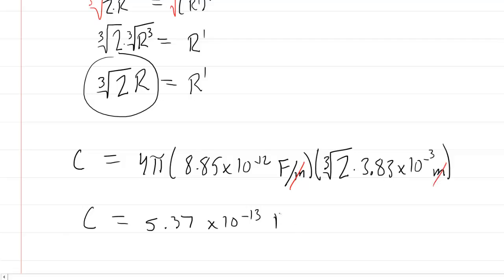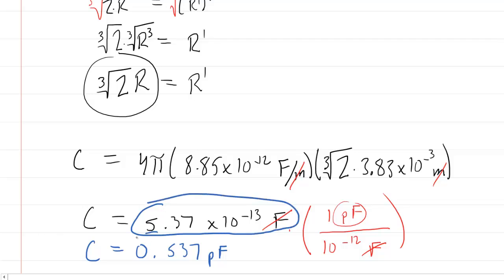And if, for some reason, your homework system needs this in picofarads, we recall that 1 picofarad is 10⁻¹² farads. Notice the way in which we've set up this conversion factor is that when we multiply, the farads would cancel, leaving you with just picofarads. So, another way to express the answer would be 0.537 picofarads. You can report your answer in farads or in picofarads if your homework system requires it.